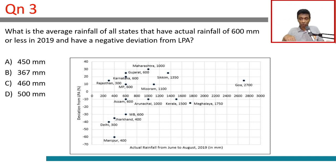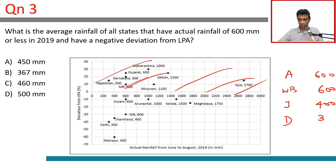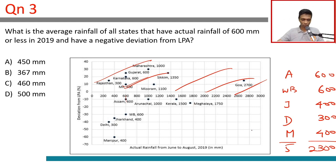Question 3: What is the average rainfall of all states with actual rainfall of 600mm or less in 2019 AND a negative deviation from LPA? The qualifying states are: Assam (600mm), West Bengal (600mm), Jharkhand (400mm), Delhi (300mm), and Manipur (400mm) — five states total. Sum = 600+600+400+300+400 = 2300mm. Average = 2300 ÷ 5 = 460mm. Isolate the states based on the conditions, then find the average.